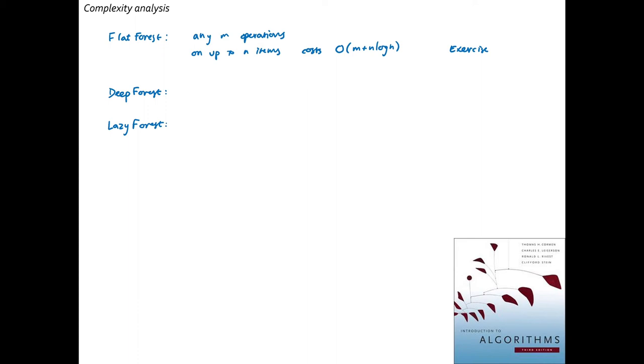For the lazy forest, this is a trickier analysis, it takes about four pages in Cormen, Leiserson and Rivest, and I'll write out the answer here. The cost of M operations on up to N items is O of M times alpha N, where alpha N, it's a special function related to the Ackermann function. Alpha N is equal to 0, for N equals 0, 1 or 2.